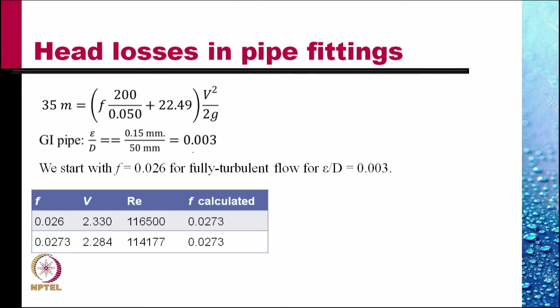And then we do iterations. From the first value we get a velocity of 2.330 and the f can be calculated from either the Moody chart or the Colebrook calculator and the value comes out to be 0.0273. We use this as a starting value.